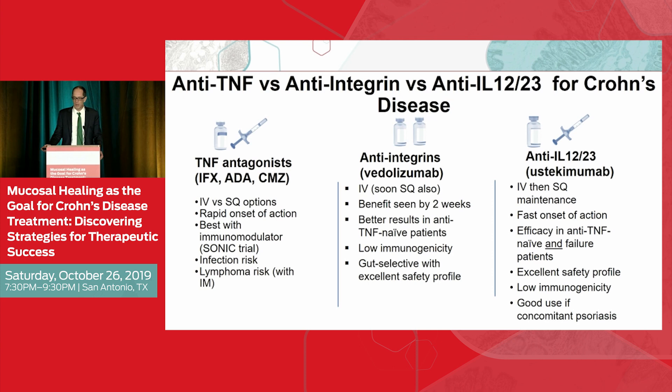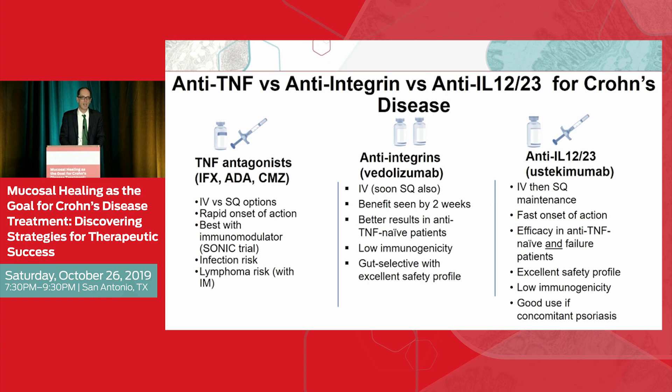Similarly, ustekinumab has generally been an agent I use as monotherapy. It's given as induction IV and then subcutaneous every eight weeks. It has a fast onset of action and has shown benefit in both biologic-naive and anti-TNF-refractory patients. It also has an excellent safety profile — as of today, there is no black box warning for ustekinumab. Very low immunogenicity, and it's also good for psoriasis, making it a strong option for extra-intestinal manifestations like psoriasis.